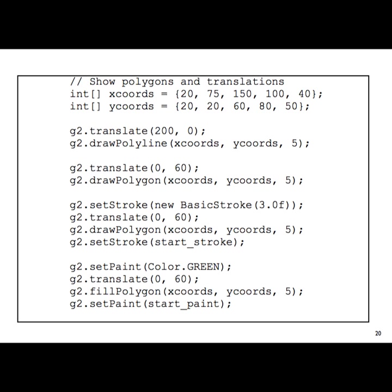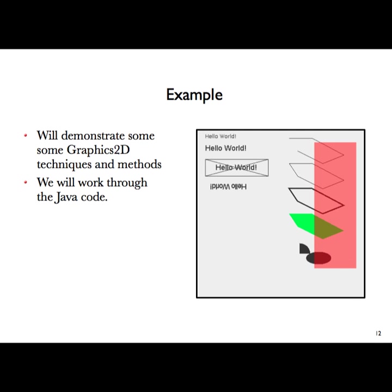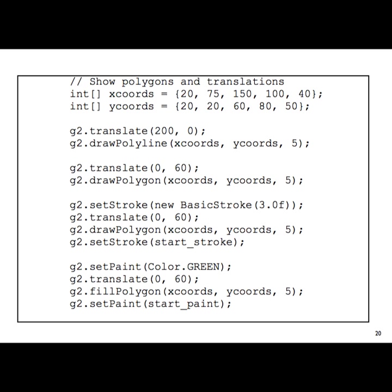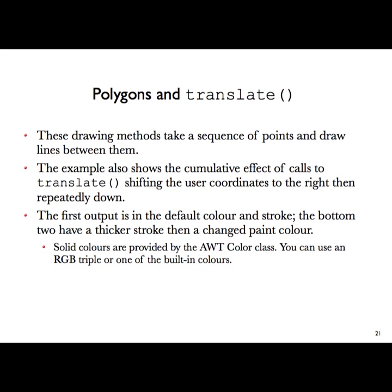This time we've changed the width of the line. When we call this same draw method, because the context has changed, the size of the line used is going to change. Looking back at the diagram, you can see it's got a thicker width of line. And then we do something slightly differently: a filled polygon with a colour and so on. You can see how to draw basic shapes.